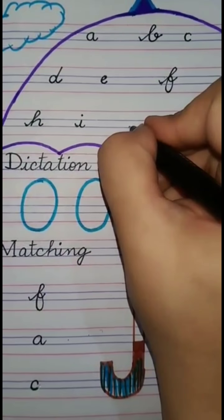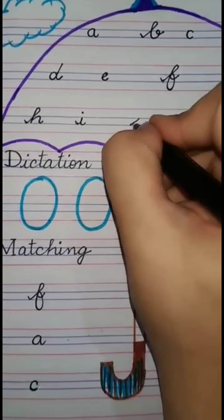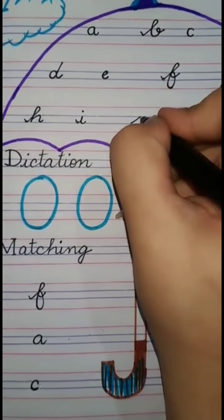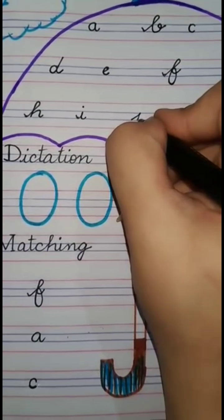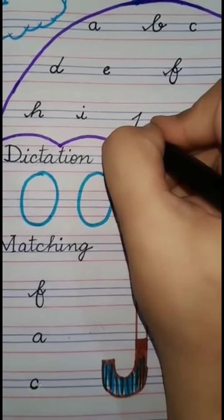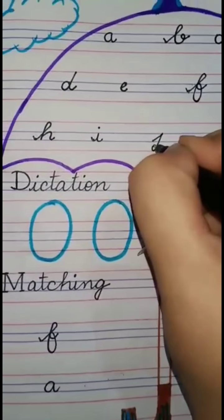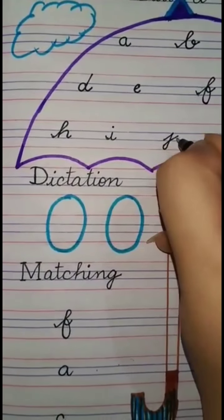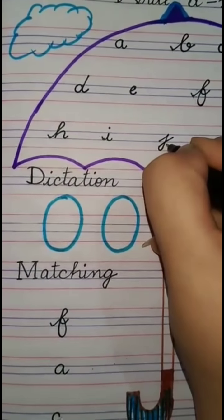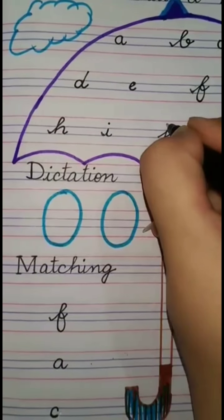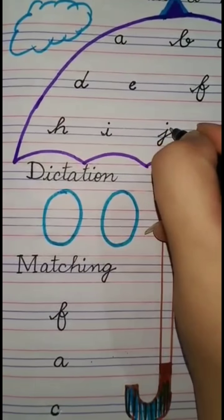Next is ja. Firstly you make a slant line on the two middle lines, come down with a slant line, curve, go up with a slant line, and cut it on the third line. Ja - Jag.